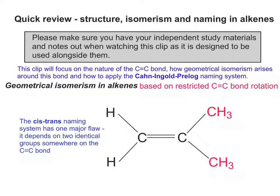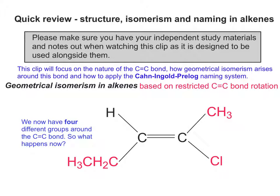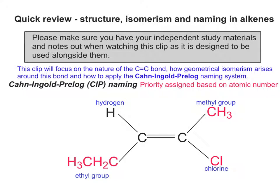The cis-trans naming system we've just looked at has one major limitation: it depends on two identical groups somewhere on the carbon-carbon double bond. If we change the groups around the double bond so that we now have four different groups, what do we do? This is where the Cahn-Ingold-Prelog naming system has superseded the cis-trans naming system.